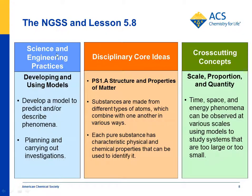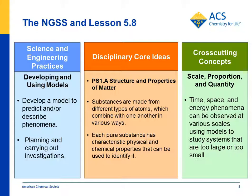Looking at the foundation boxes for science and engineering practices, the idea is to develop a model to describe phenomena. Students definitely do that by looking at the water molecule and the carbon dioxide molecule and understanding their observation about why carbon dioxide can be in solution to begin with. Then they plan and carry out an investigation to see why carbon dioxide comes out of solution when carbonated water is heated as opposed to when it's cooled. For disciplinary core ideas, substances are made from different types of atoms which combine with one another in various ways. Students look at the water molecule and the carbon dioxide molecule, and that substances have characteristic physical properties — in this case, the physical property of carbon dioxide being able to be in solution in water. And for the cross-cutting concept of scale, proportion, and quantity, students can look down at the submicroscopic level, at the atoms and molecules of a substance, and be able to analyze and conclude why a particular substance behaves the way it does on a macroscopic level.